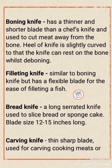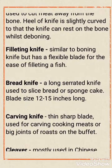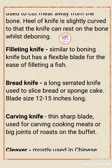Next one is the filleting knife. The filleting knife is similar to the boning knife but there is a small difference — it has a flexible blade for the ease of filleting a fish. It is basically used for fish and has a very flexible blade.